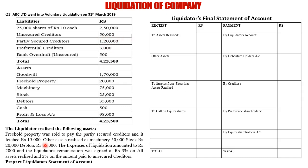The other assets realized are: machinery Rs. 50,000, stock Rs. 20,000, and debtors Rs. 25,000. The expenses of liquidation amounted to Rs. 2,000, and the liquidator's remuneration was agreed at 3% on all assets realized and 2% on the amount paid to unsecured creditors. This is the most important adjustment — here we will have to find out the liquidator's remuneration.